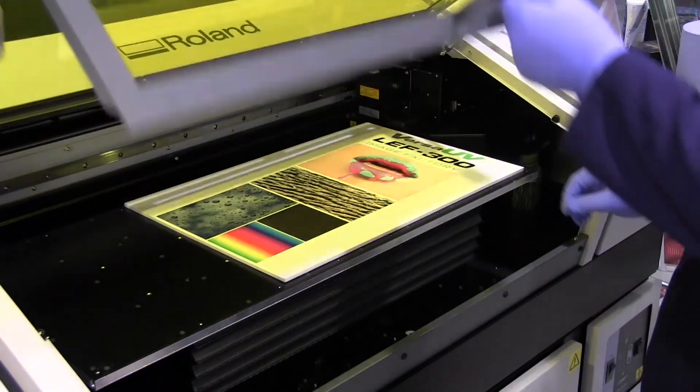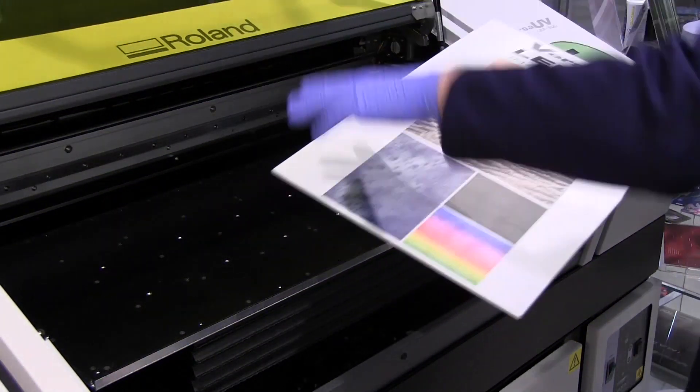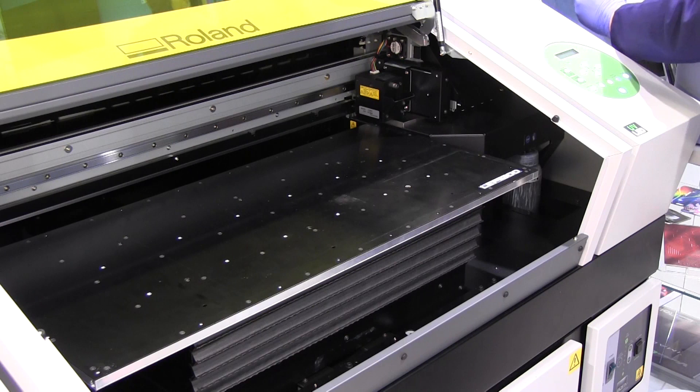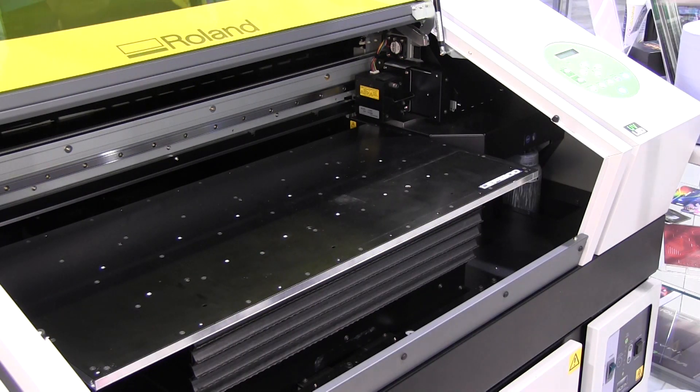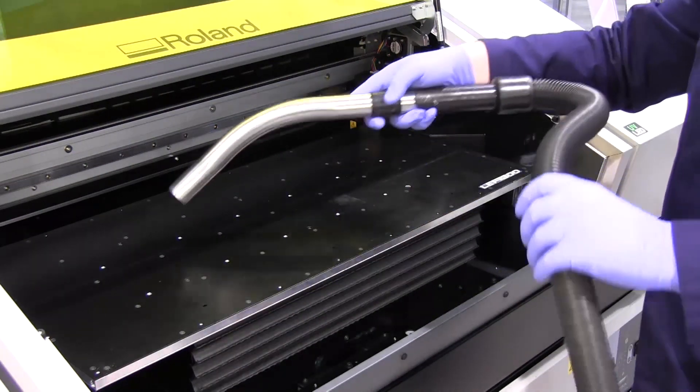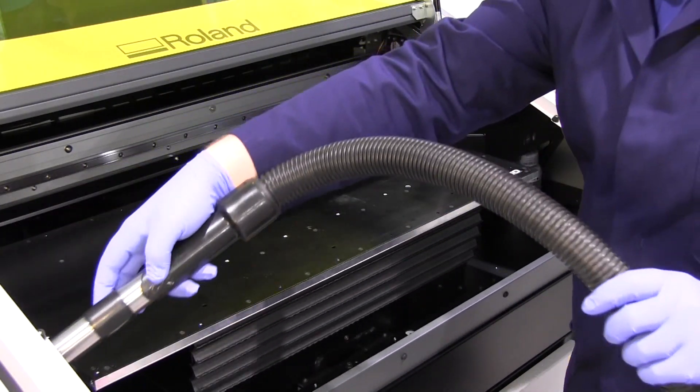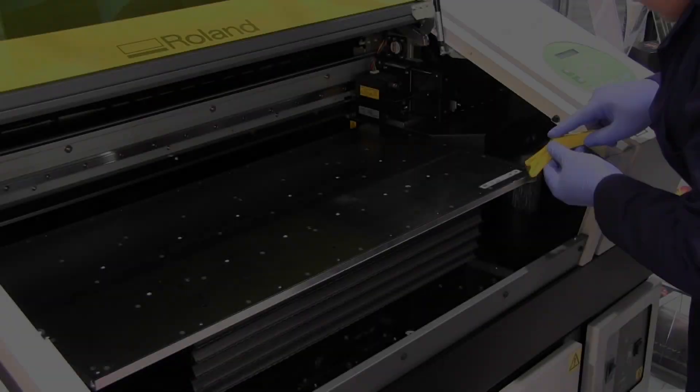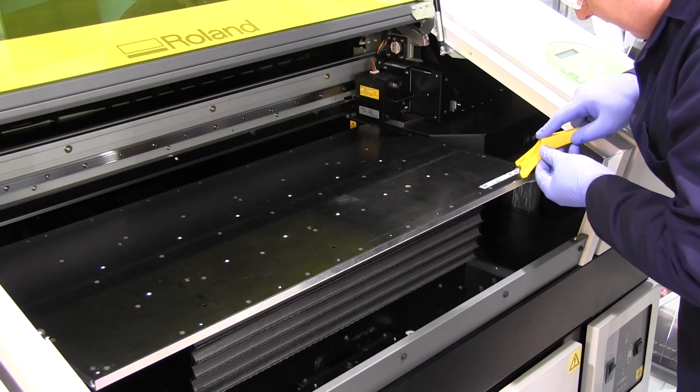First of all, remove any media that is in the machine. Next we are going to need to clean all of the surfaces within the device. For this you could use a vacuum or a tack cloth that will help to pick up any settled dust or loose particles.